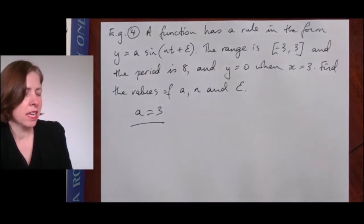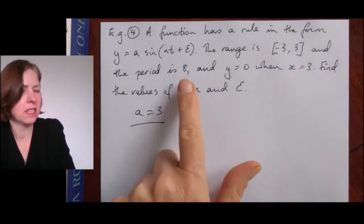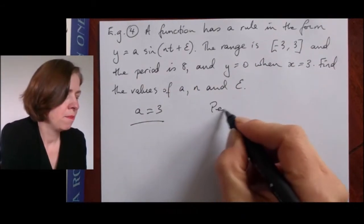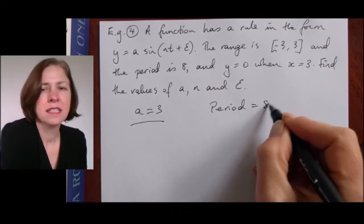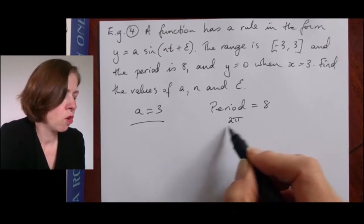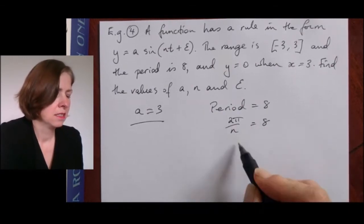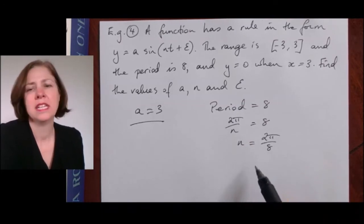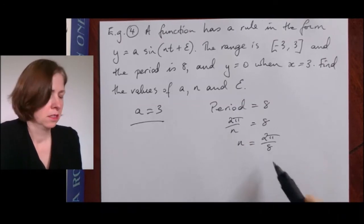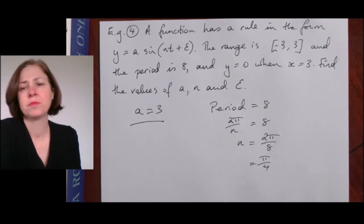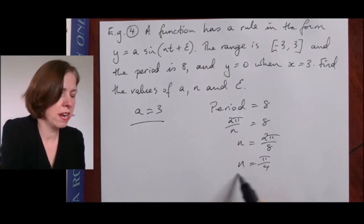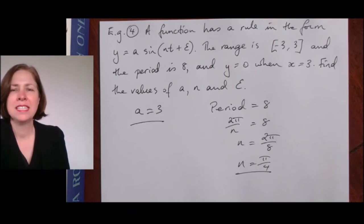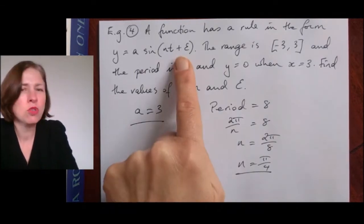The next thing I can use is that the period is eight, which will help me find n. Period is eight, so two pi on n equals eight. Solving that gives n equals two pi on eight, which is the same as pi on four. So I've now found a and n, and the last thing I need to find is epsilon — my horizontal translation.